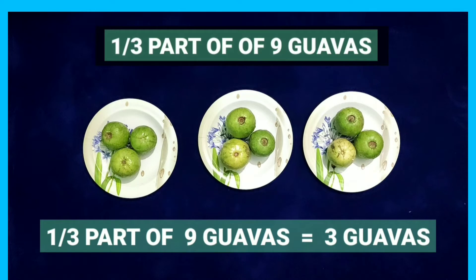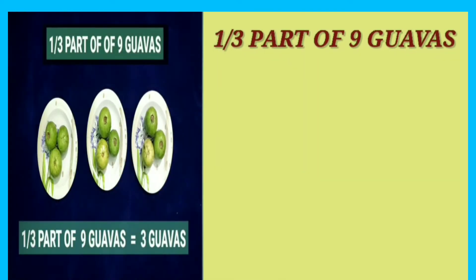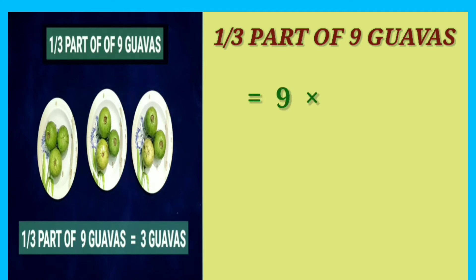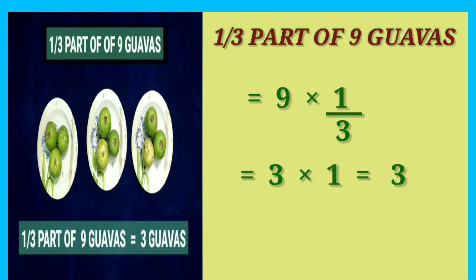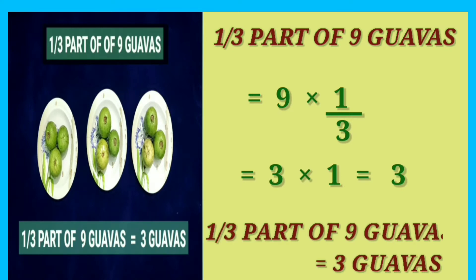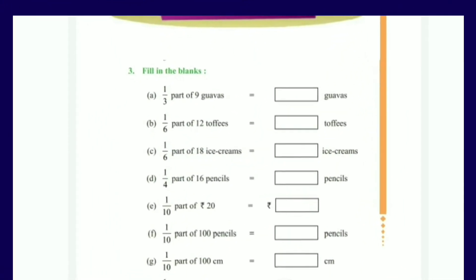Now let us solve the same fraction using fundamental operations. 1/3 part of 9 guavas is written as 9 multiplied by 1/3. We divide 9 by 3 — since 3 times 3 is 9, the quotient is 3. Multiplying 3 by 1 gives 3. Therefore, 1/3 part of 9 guavas is equal to 3 guavas.